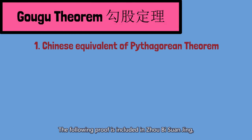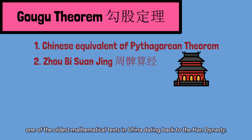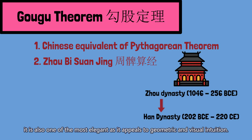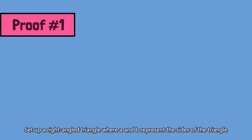Gougu theorem is the Chinese equivalent of the Pythagorean theorem. The following proof is included in Zhu Bi Suan Jing, one of the oldest mathematical texts in China, dating back to the Han Dynasty. Although it is one of the oldest recorded proofs, it is also one of the most elegant as it appeals to geometric and visual intuition.